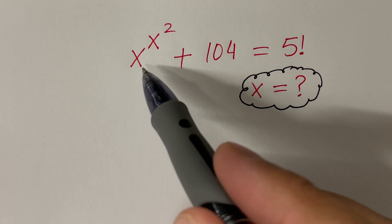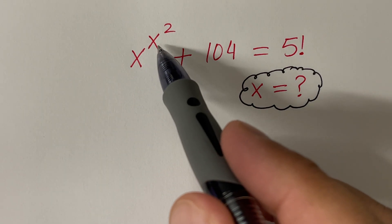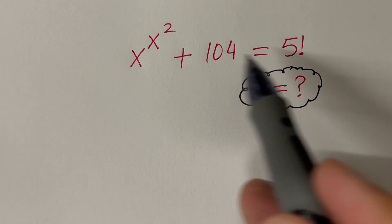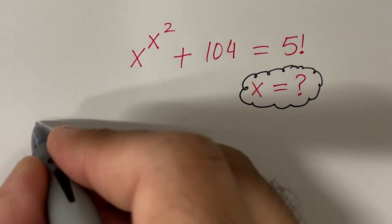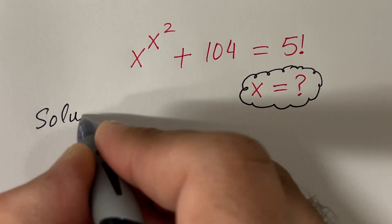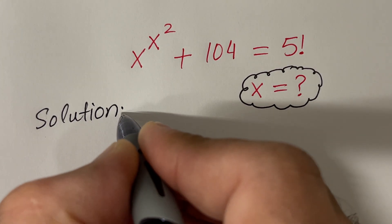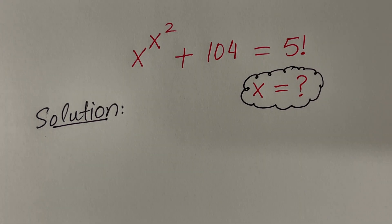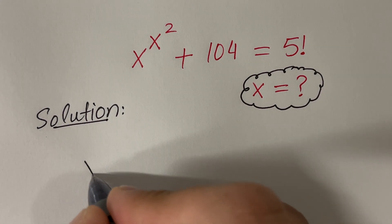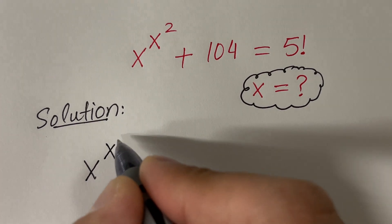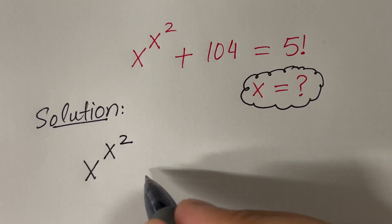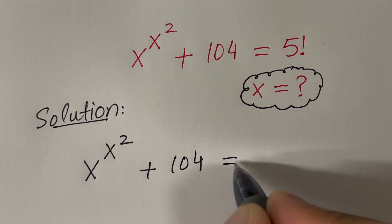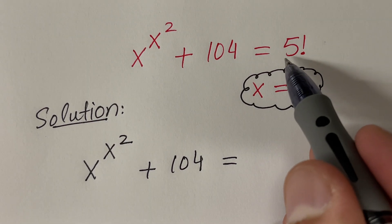In this video, we are given power towers and factorial. We have factorial and power tower in this equation. Let's start our solution. We want to find x that satisfies this equation. Let me rewrite the left hand side: we have x raised to the power x raised to the power 2, plus 104. And you know what 5 factorial equals?